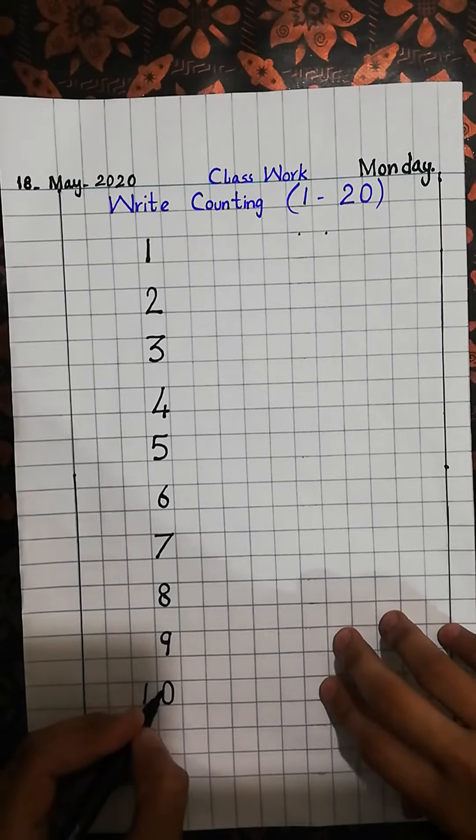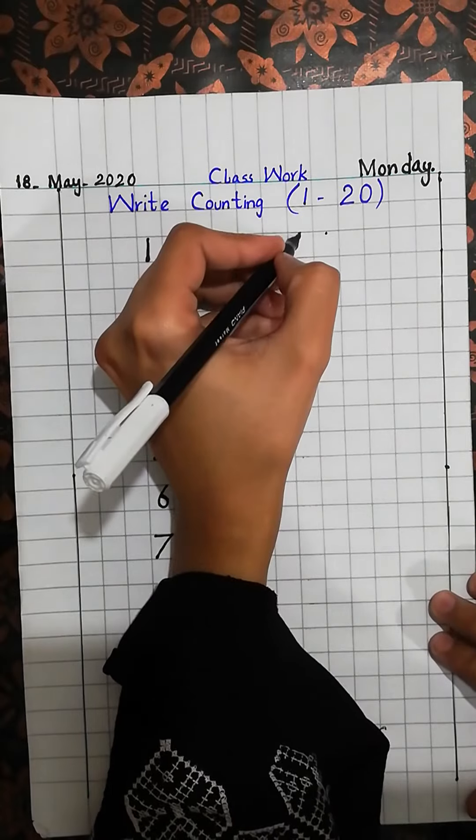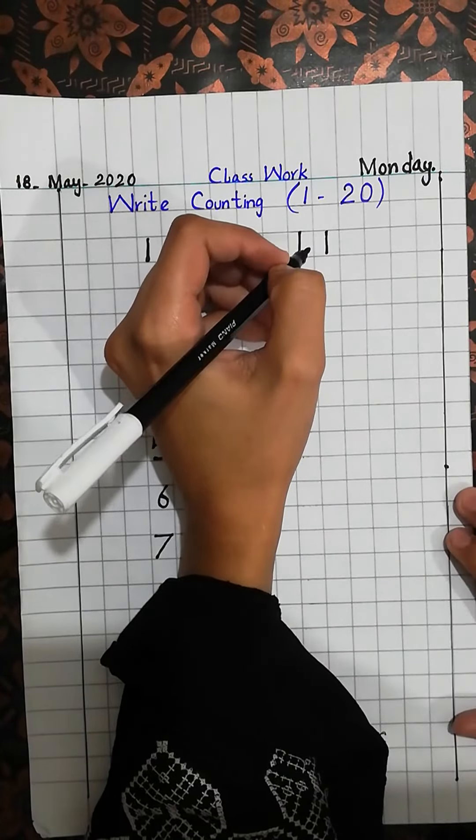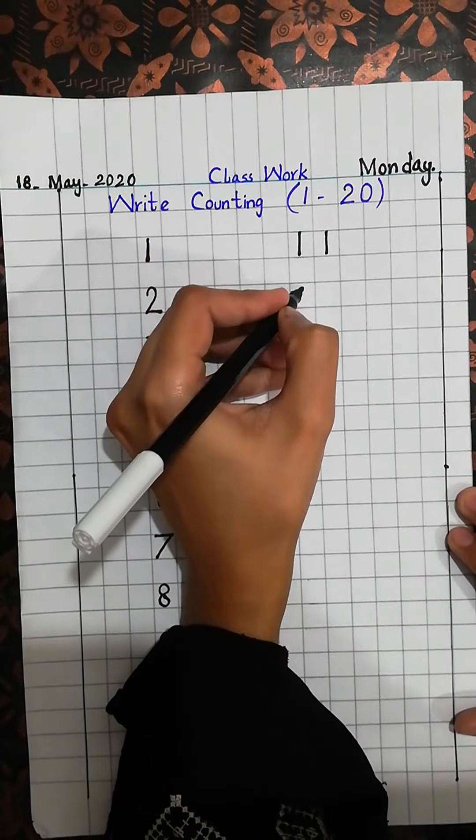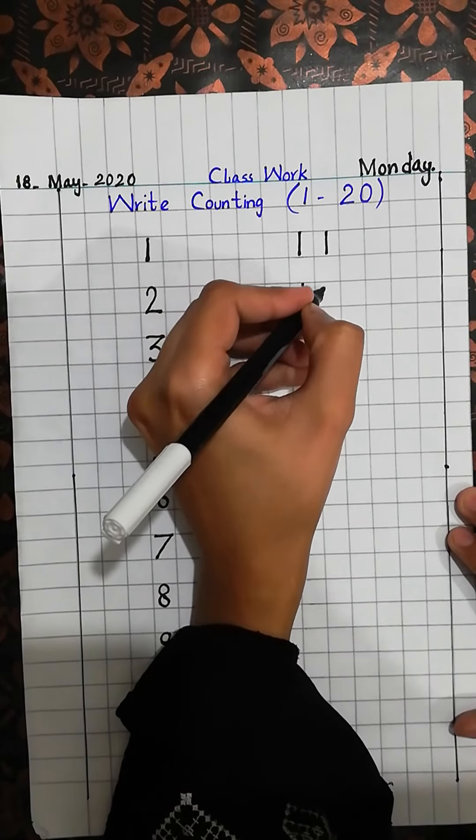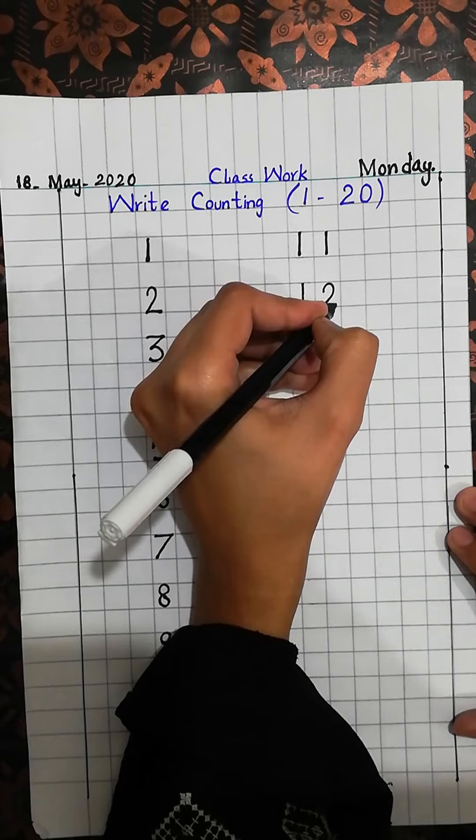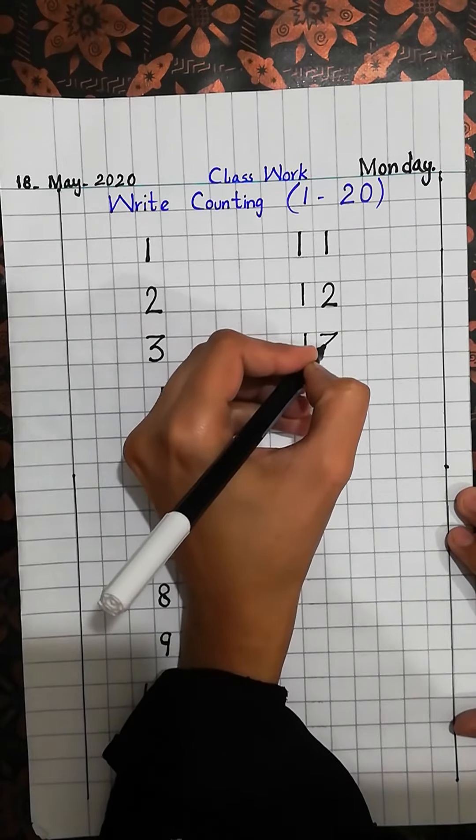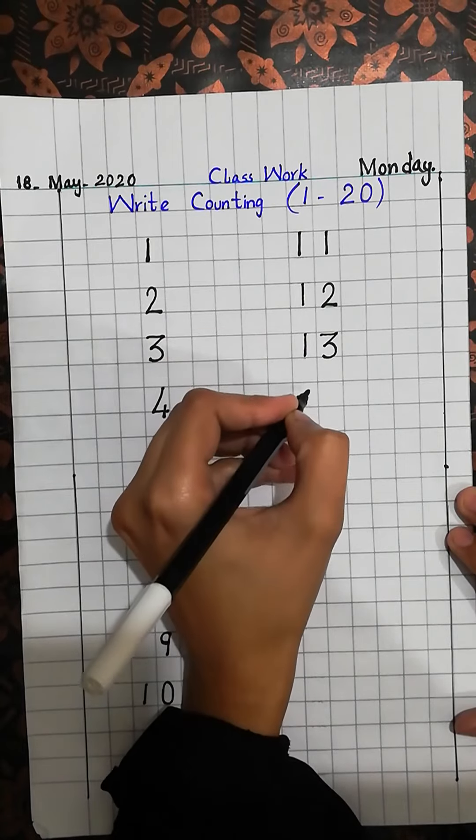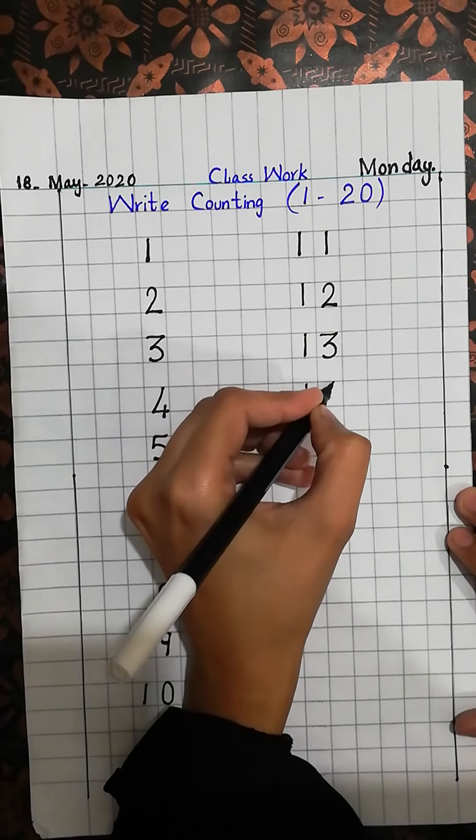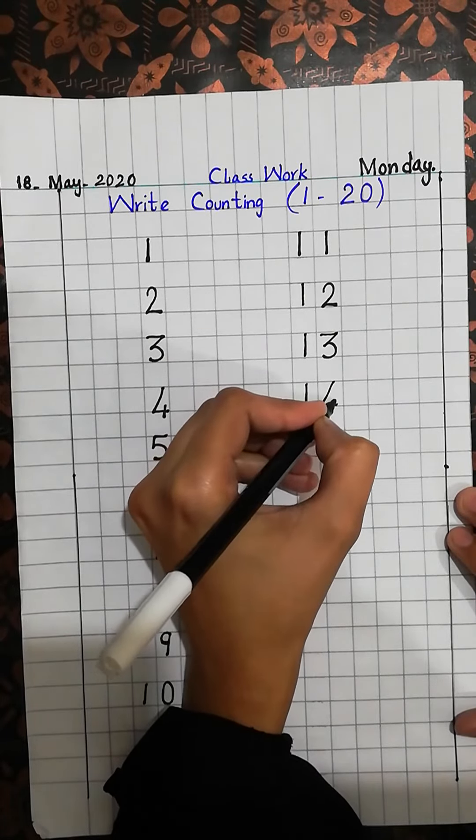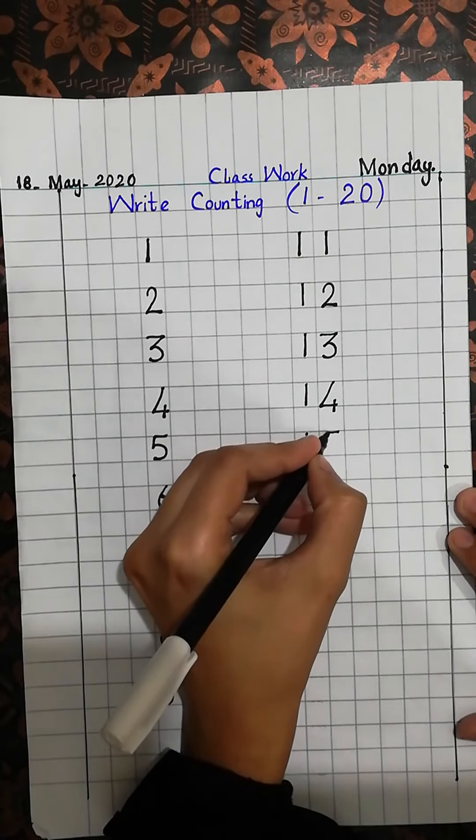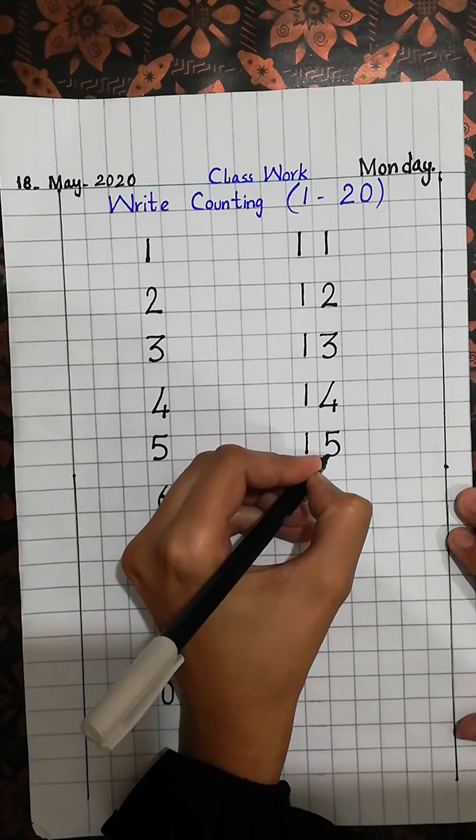1, 1. 11. What will be the next number? 1, 2. 12. 1, 3. 13. 1, 4. 14. 1, 5. 15.